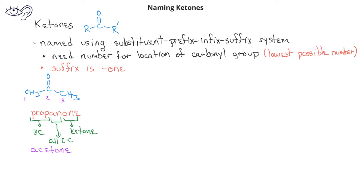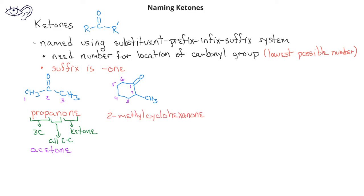In the second compound, we have a cyclohexane ring with one of the carbons in the ring being a carbonyl carbon, which is double bonded to an oxygen. We also have a methyl substituent next to the carbonyl carbon in the ring. If we start numbering at the carbonyl carbon as one, the methyl group would be on carbon number two in the ring. We would name this compound 2-methylcyclohexanone, and again we do not need the number to indicate where the carbonyl carbon is.